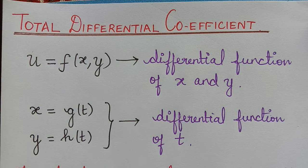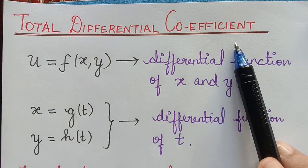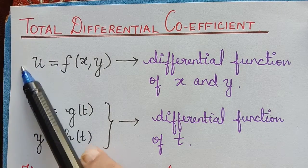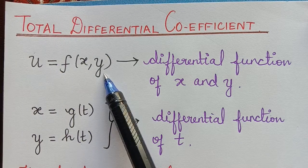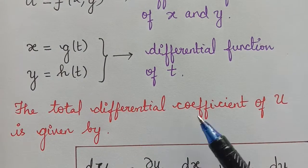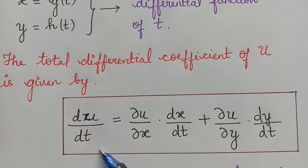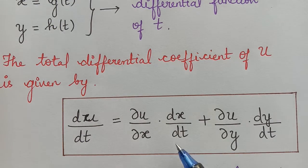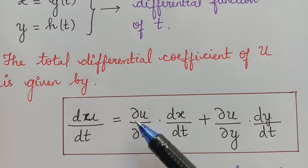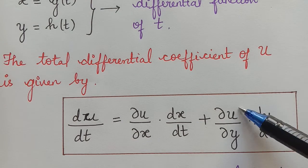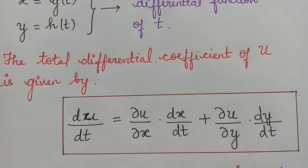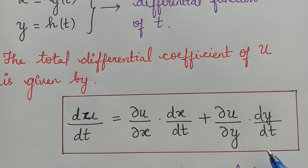Dear students, we are going to learn problems under the topic total differential coefficient. If we consider a differential function u equal to f(x, y), where x and y are differential functions with respect to variable t, then the total differential coefficient of u is given by: du/dt = (∂u/∂x)(dx/dt) + (∂u/∂y)(dy/dt), where ∂u/∂x and ∂u/∂y are partial derivatives of u, and dx/dt and dy/dt are derivatives of x and y with respect to t. Now using this concept let us solve some problems.